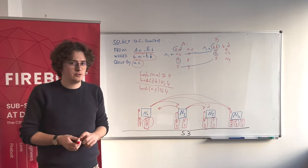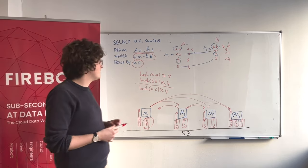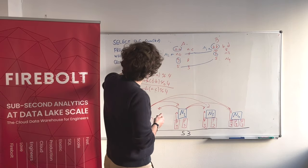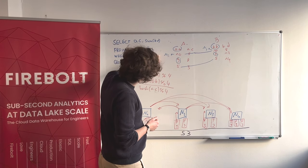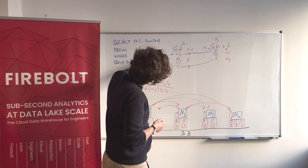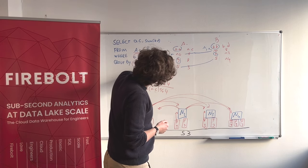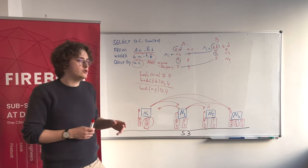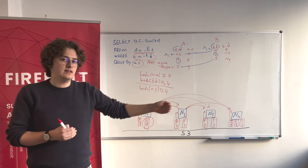However, for a lot of queries, this doesn't have to be the case. You might, for example, have a filter here where A.A equals B.B and let's say A.name equals venture. In this case, we can use the additional predicates in order to actually scan less data.